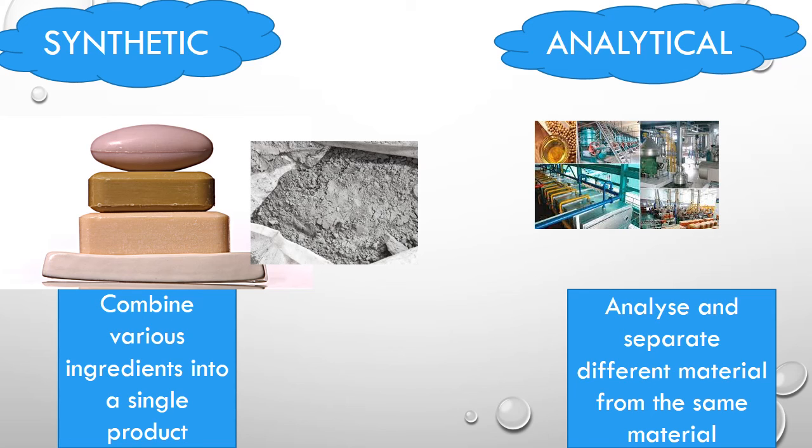When we separate crude oil from the primary state, from our natural resource, it is one crude oil, one product, one raw material. You can separate from that petrol, diesel, kerosene, and gasoline. So this is an example of your analytical industry.